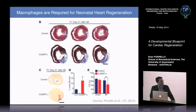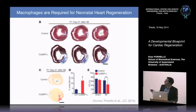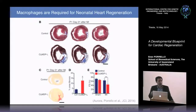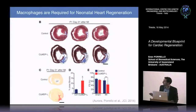In contrast to one-day-old control hearts which regenerated following infarction, clodronate-treated hearts had an impaired regenerative response with very large fibrotic scars at day 21. There was a two- to three-fold increase in fibrosis area in clodronate-treated mice compared to controls, associated with decreased cardiac function.